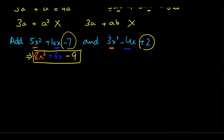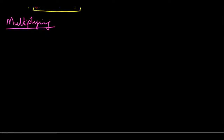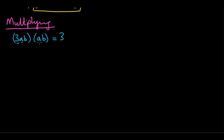Next let's look at multiplying algebraic expressions. If we have 3ab times ab, this is similar to the exponent rules — when bases are the same, powers are added. First handle the constants: 3 times 1 gives 3. Then a to the 1st times a to the 1st gives a squared, and b to the 1st times b to the 1st gives b squared. So the result is 3a squared b squared.